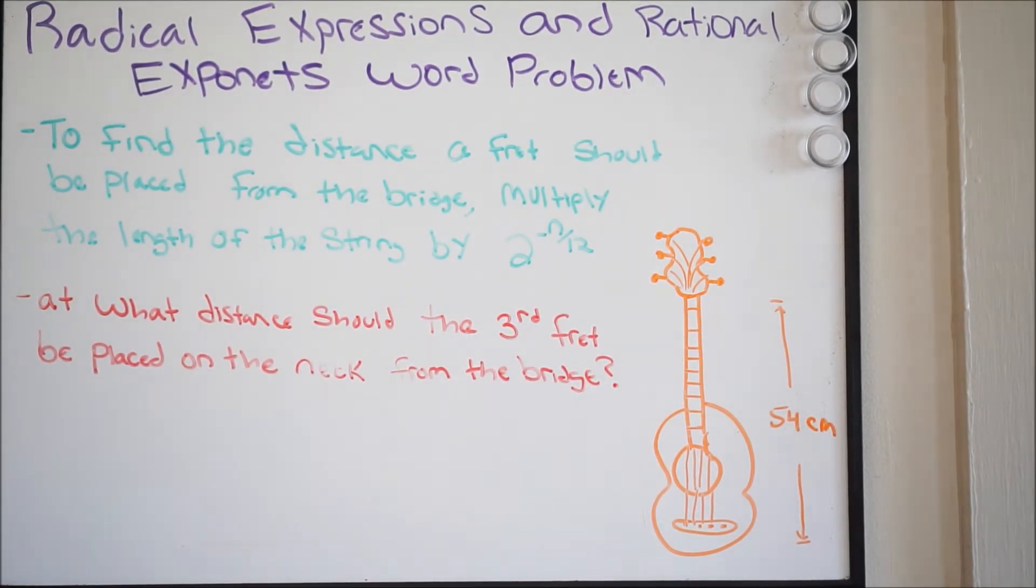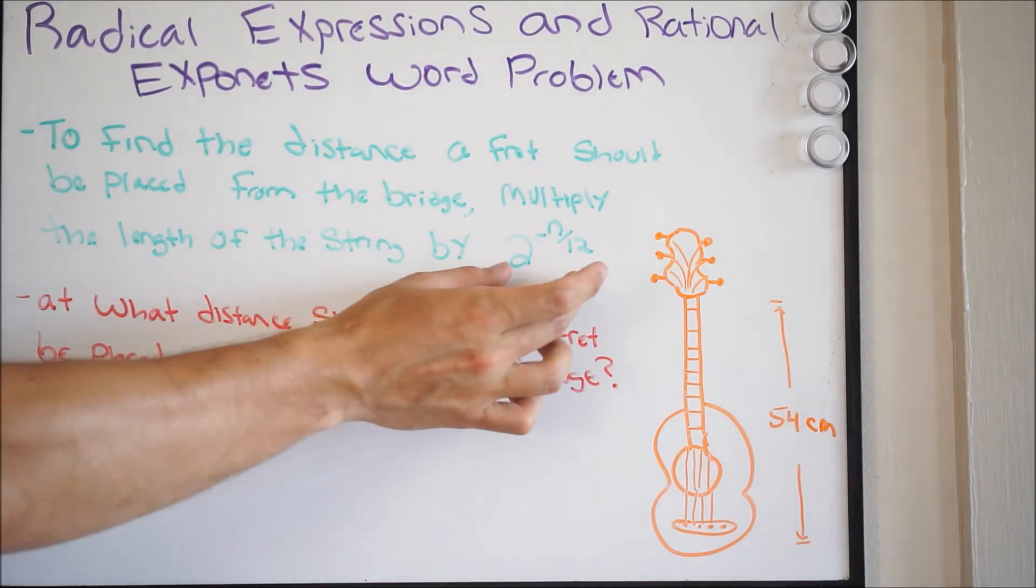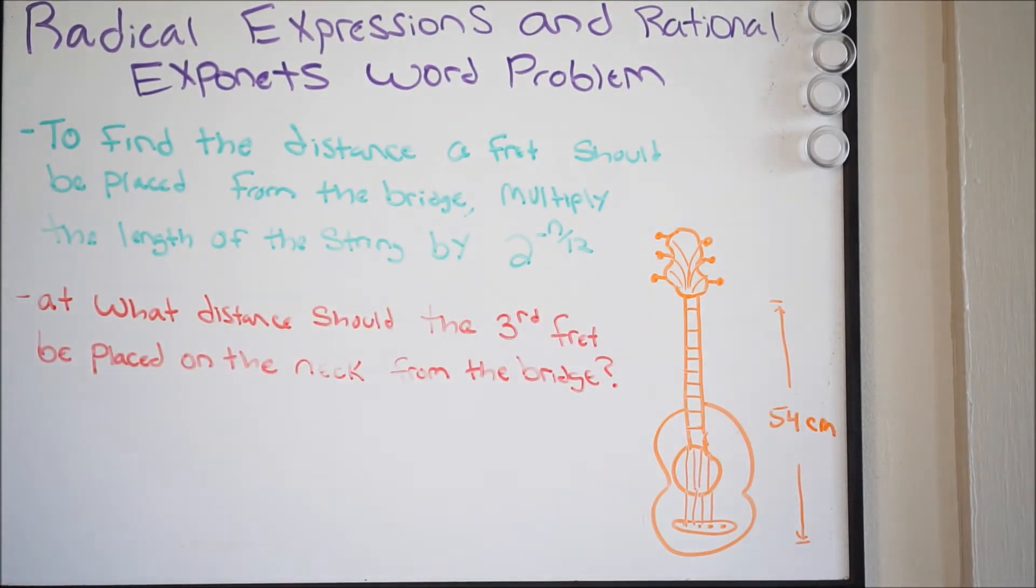So what they want us to figure out is where should this third fret be placed. So again, they give us this value right here, and they tell us to multiply the length of the string by this number to figure out where the third fret should be. Now this N is going to be where you put in your third fret, or 3.